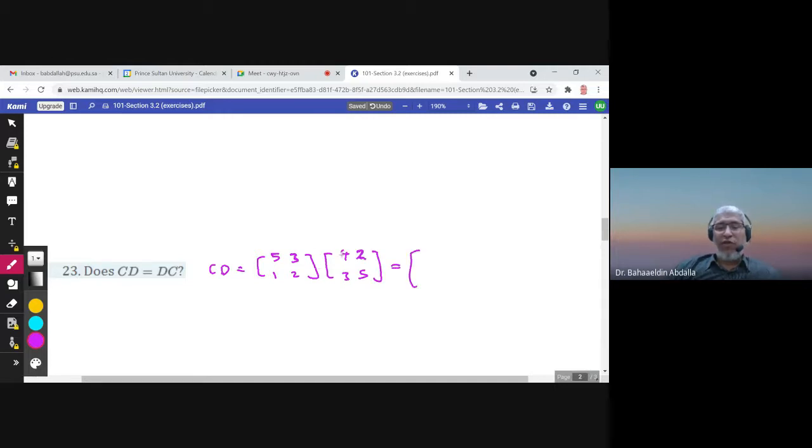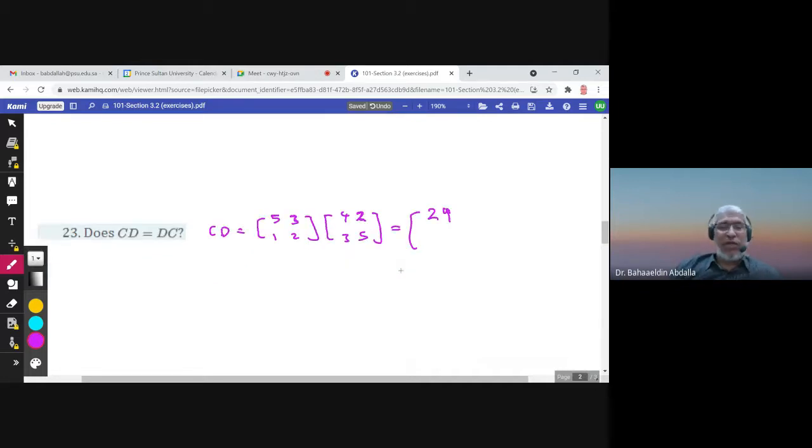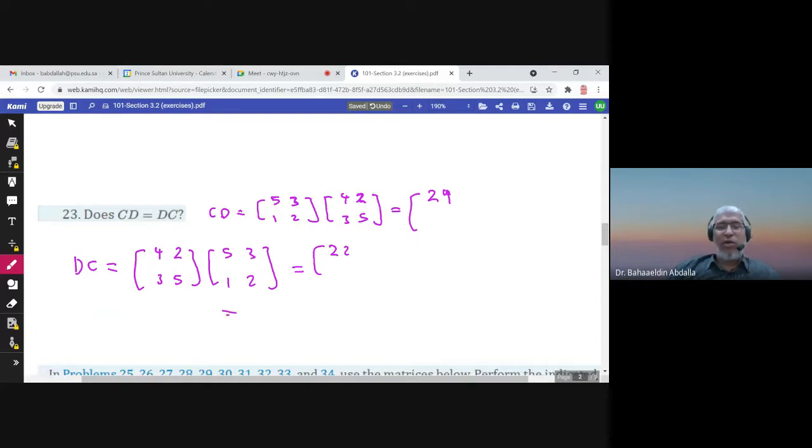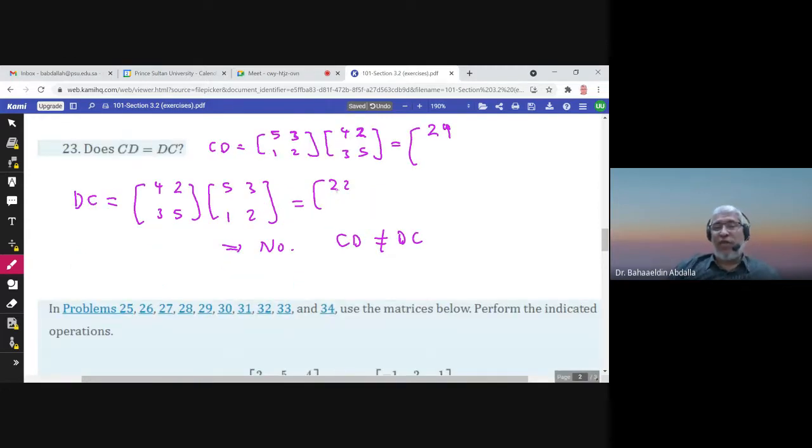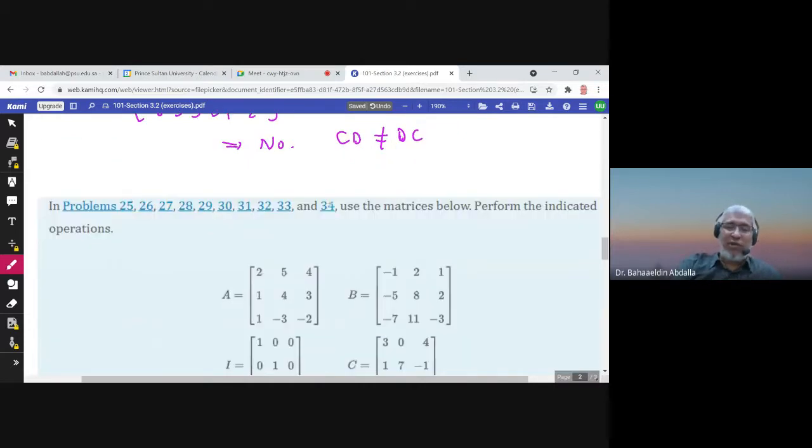5 times 4, 20, plus 3 times 3, that's 29. So the first element here is 29. Let me check the first element in DC. 4 times 5, 20, plus 2, 22. 29 is not equal to 22. So no, CD is not equal to DC. Of course, if they are different in one entry, that's it. They will be different, not equal.